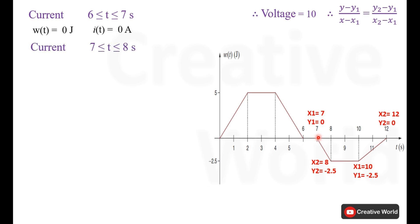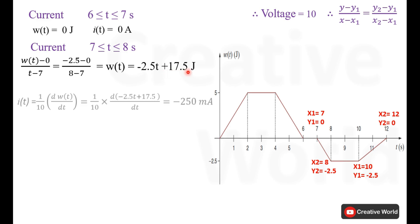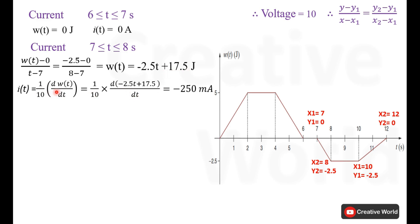Between time interval 7 and 8 seconds, the starting and ending points are as mentioned. Putting these points into the equation, energy is retrieved as −2.5T + 17.5 joules. Placing this value of energy into the current equation, we get −250 milliamperes.